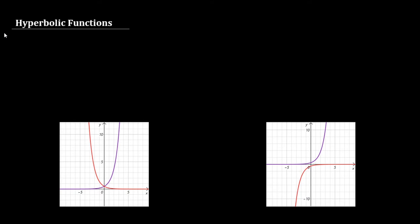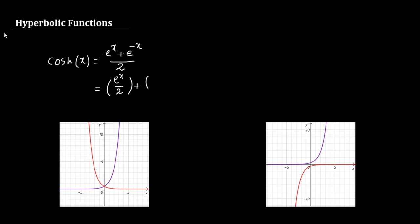The two fundamental hyperbolic functions are the hyperbolic cosine function and the hyperbolic sine function. Hyperbolic cosine function is defined as cosh(x) = (e^x + e^(-x)) / 2. It is the sum of two functions e^x / 2 and e^(-x) / 2.